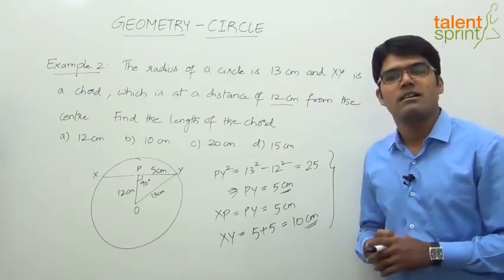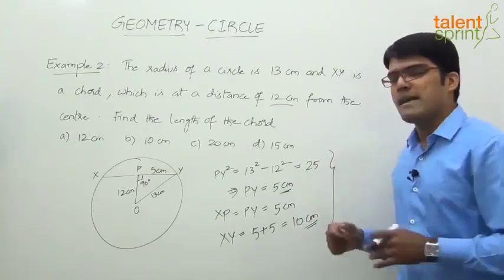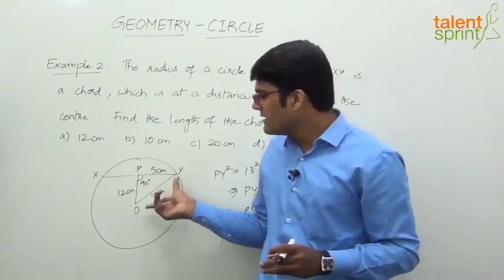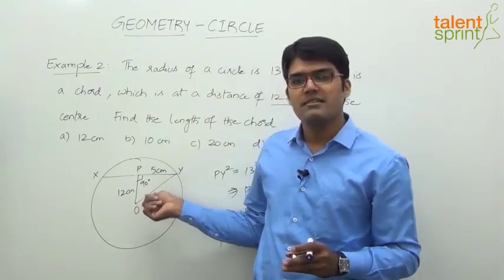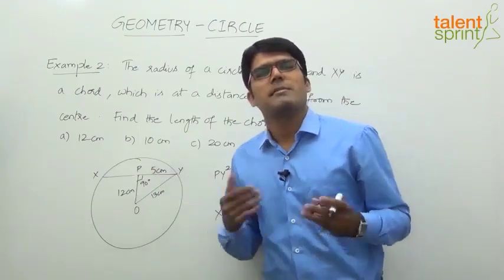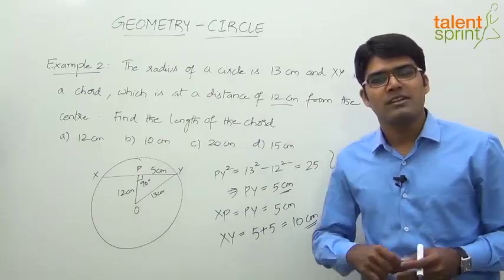So both example one and example two are based on the Pythagorean application. Always remember, the radius will be the hypotenuse. From the center, draw a radius, it becomes the hypotenuse, and you get a right angle triangle. Apply Pythagorean theorem on the right angle triangle, solve for the unknown value, and get the required answer.